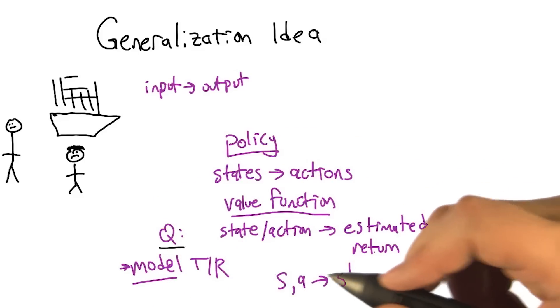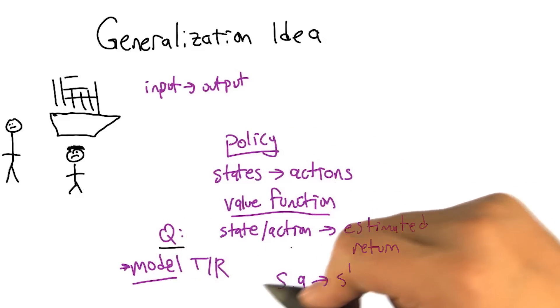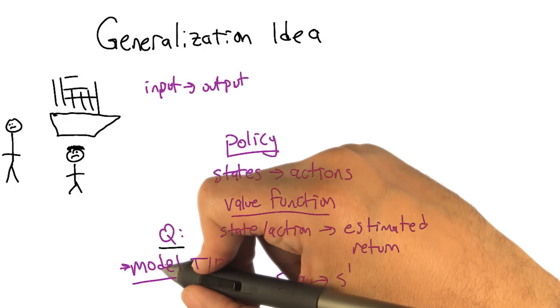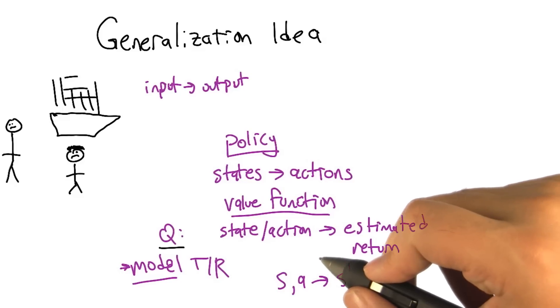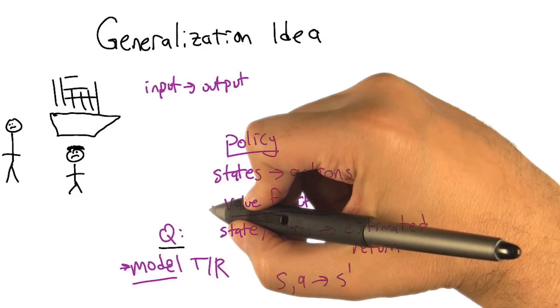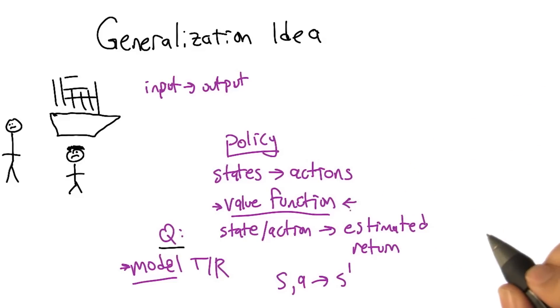Nice. So that being said, using function approximation models, it has been done in the field, but it's not that well understood. In particular, you need models that can actually predict many, many steps ahead to be able to be used effectively for planning and decision making. Mostly what researchers have focused on is function approximation in the value function, the generalization of the value function. So that's what we're going to look at in the rest of this lesson. Okay, cool. I look forward to it.